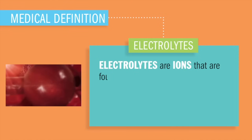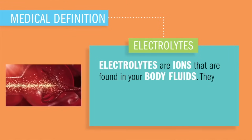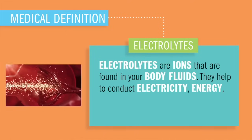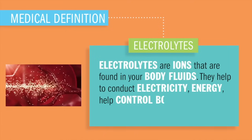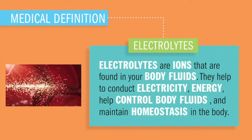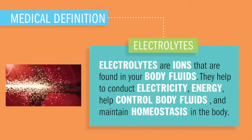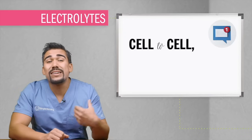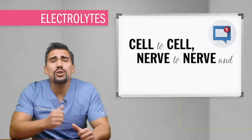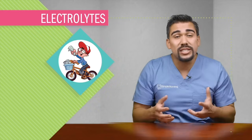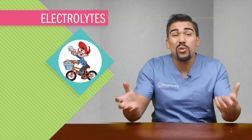Electrolytes are ions that are found in your body fluids. They help to conduct electricity and energy, which helps control body fluids and maintain homeostasis — this balance of the body. Basically they help the body send messages from cell to cell, nerve to nerve, and organ to organ. Kind of like little paper boys relaying vital messages all over the body.